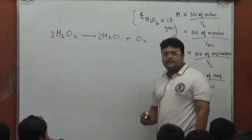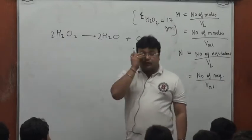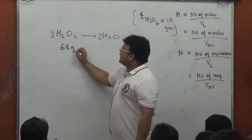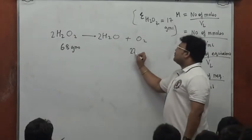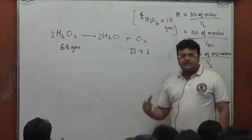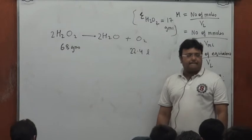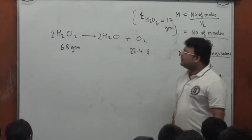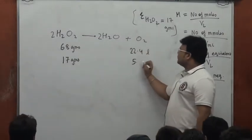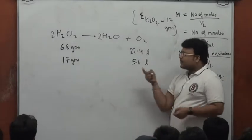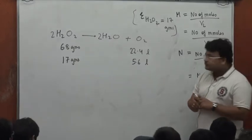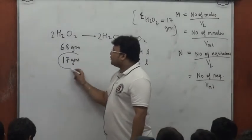H₂O₂ produces H₂O plus oxygen. The molecular weight is 34 and the equivalent weight of H₂O₂ is 17. So 68 grams of H₂O₂ will produce 22.4 liters of oxygen at NDP. Therefore, 17 grams will produce 5.6 liters of oxygen at NDP.